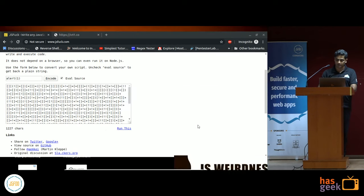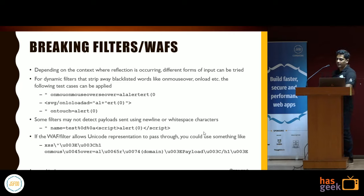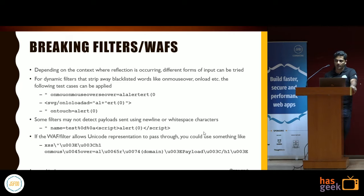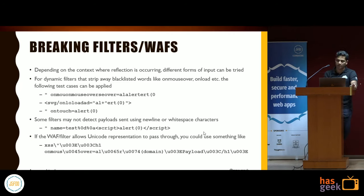Depending on the context where reflection occurs, different forms of input can be tried to bypass dynamic filters. Some filters won't detect payloads sent using newline or whitespace characters — you can try tab characters or percent-encoded sequences like %0D%08 in between attribute names. There was a bug in SharePoint where .NET would render anything after a tag and a character innocuous, but passing an ampersand-null (&00) immediately after a tag would slip through the server and still get the payload executed — essentially passing a null character to the server.